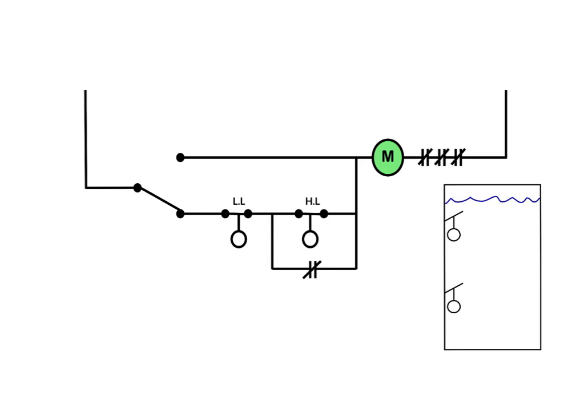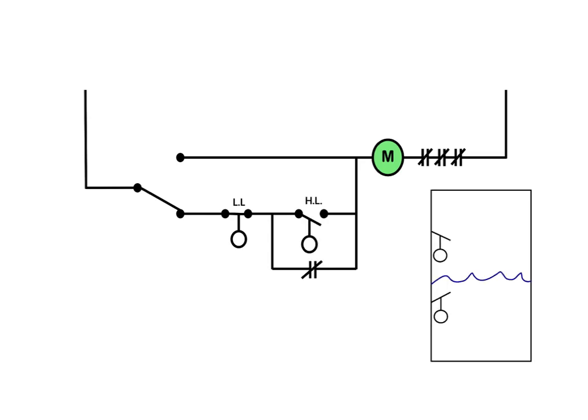So we'll see what happens next. Here we've seen that as this began to pump, the level has dropped, which means that the high-level float has dropped down. The high-level float in the control circuit has dropped down, but we still want this water to drain.